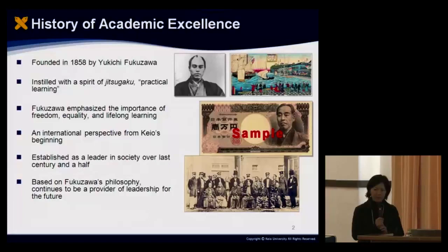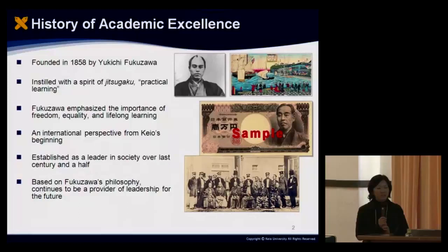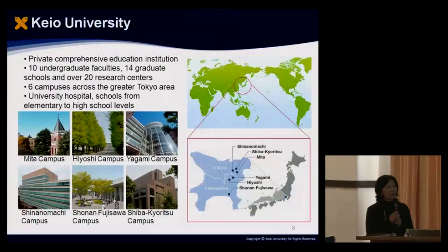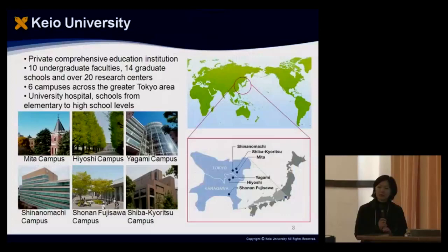Through over 150 years of history, we have established ourselves as a leader in society. Based on Fukuzawa's philosophy, we continue to be a provider of leadership for the future. Although we have very strong research-oriented activities, educating future leaders is very important to us. Keio University is located in the metropolitan Tokyo area — the Mita campus is very close to Tokyo Tower, in the central heart of Tokyo — with other campuses in the greater Tokyo area and in the Yokohama area.